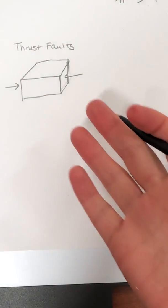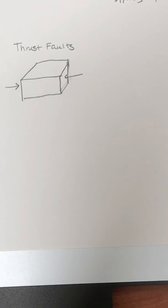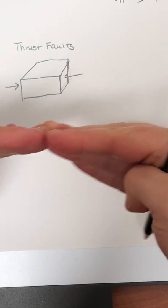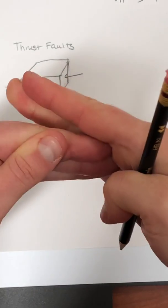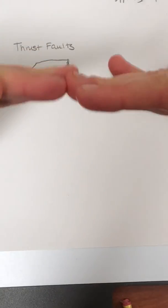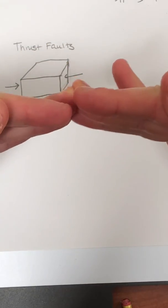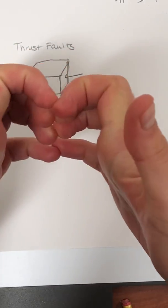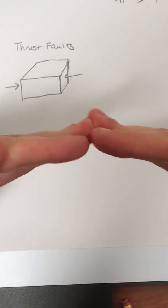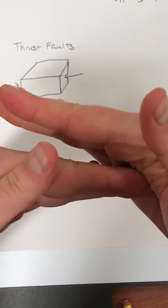So if you push it in from the side, you might start to fold this block or bend this block, but you could also, if it were a hard block, you could break it. So you can imagine taking your hands, pushing them together, and eventually either your fingers are gonna give and you're gonna fold your fingers, or you're gonna push and they're gonna slide against each other.